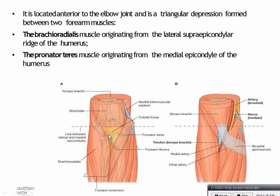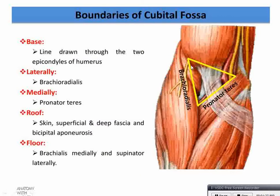It is homologous to the popliteal fossa in the lower limb. The boundaries of the cubital fossa: the base is formed by a line joining the two epicondyles of the humerus, laterally by the medial border of brachioradialis, and medially by the lateral border of pronator teres.